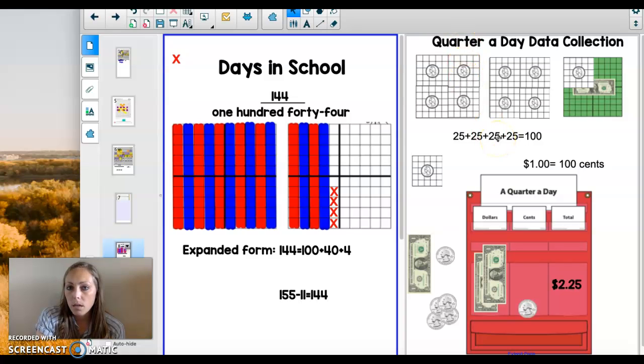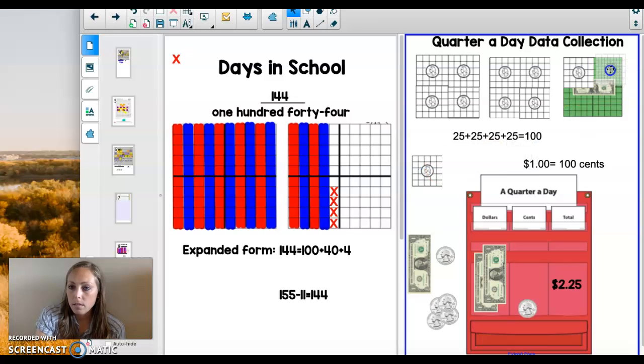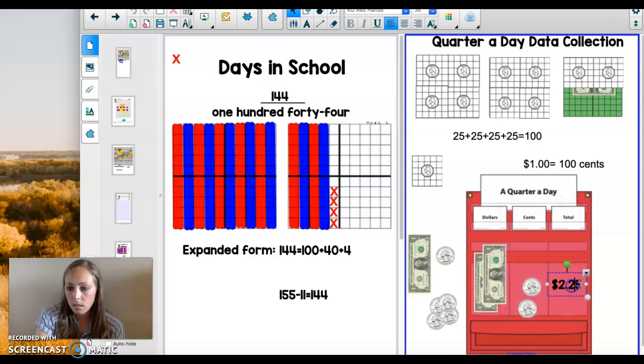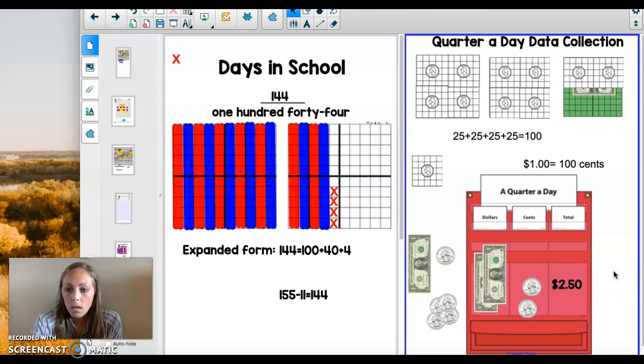Now let's work on our quarter a day data collection. Yesterday we ended with $2.25. Today we're going to add another quarter, which is another 25 cents. So over here now, we have 50 cents. It's $1, another dollar, which together makes two. And then we have 50 cents. So it's $2.50. Let's add another quarter down here. Again, there's $2 right there. 25 plus 25 makes 50. So it's $2.50.